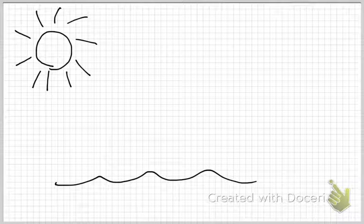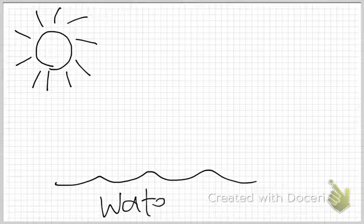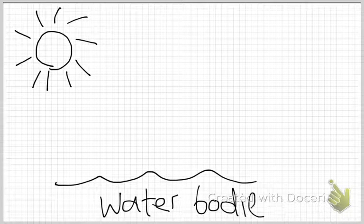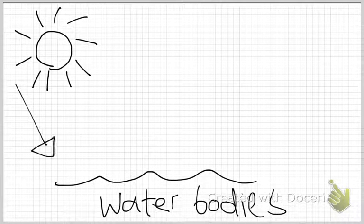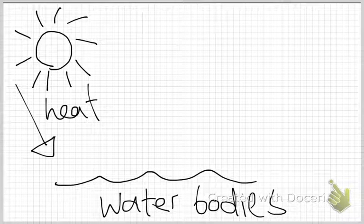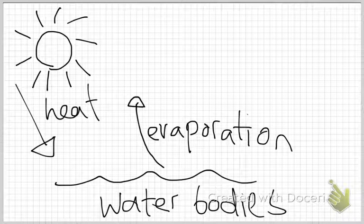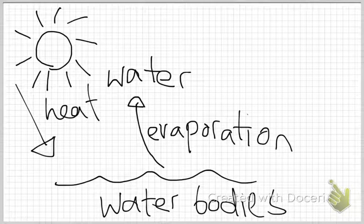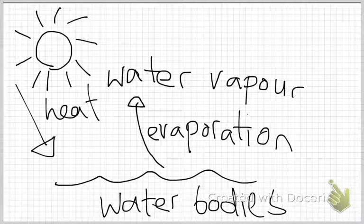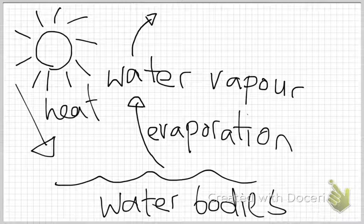Now, let me show this diagram again. The Sun is the main source of energy — we already know that. The Sun provides heat for the earth, and the heat heats up the water bodies. The first process that will occur — Nicole, can you tell us what will happen when the water bodies gain heat? Evaporation! That's right, evaporation will occur. It changes from liquid to gaseous state. That gaseous state is called water vapor.